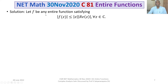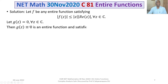Let F be any entire function satisfying the condition |F(Z)| ≤ |Z| · |Re(Z)| for all Z belonging to C. Let G(Z) = 0 for all Z belonging to C, meaning G(Z) is identically equal to 0. Obviously it is analytic everywhere, therefore it is an entire function, and G(Z) ≡ 0 satisfies this condition. So the zero function is an entire function satisfying the above condition.